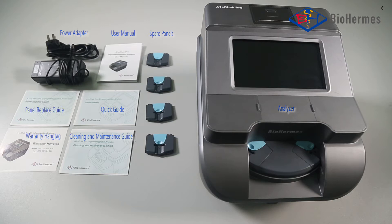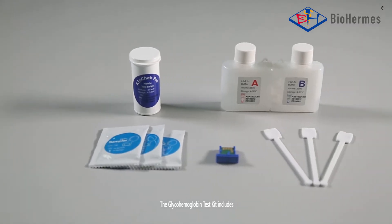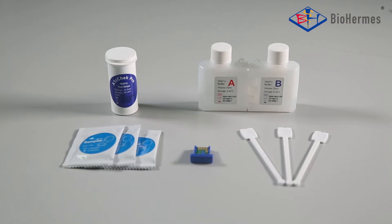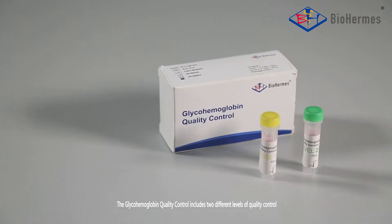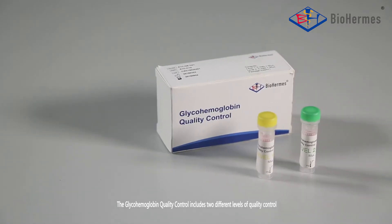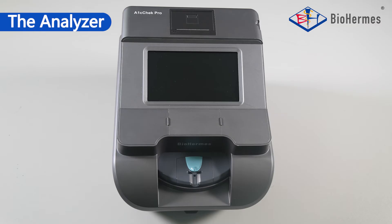The Glyco-Hemoglobin Test Kit includes: HbA1c Test Strip, Buffer A, Buffer B, Sampler, Code Chip, and Blood Collector. The Glyco-Hemoglobin Quality Control includes two different levels of quality control.